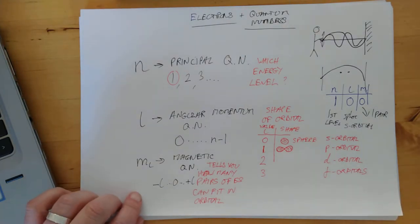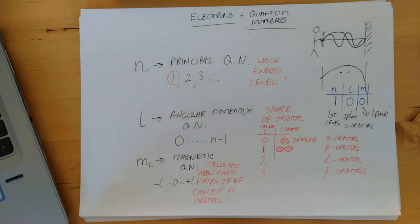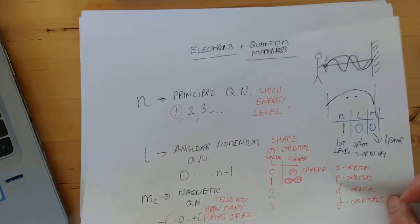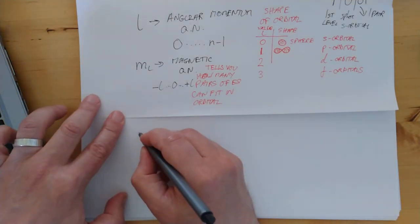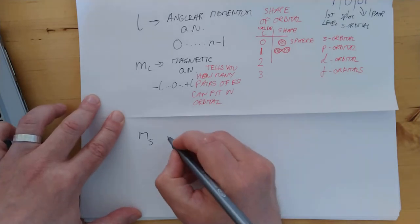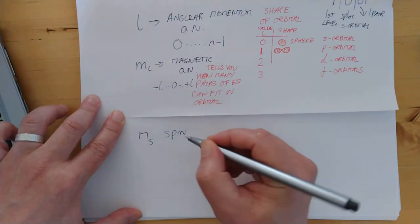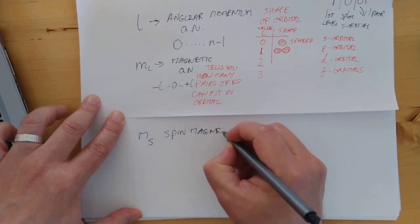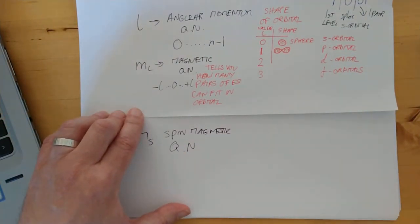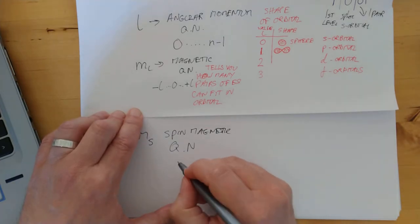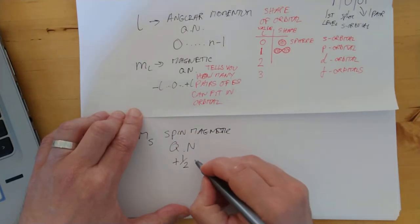I think I'll do the last quantum number. The last quantum number, they've changed the notation of this one slightly. This is called MS. This is the spin magnetic quantum number. What does it tell you and what are its values? The good news is the values are actually surprisingly sane. This can either be plus a half or negative a half. What does it tell you? The SQA says that it tells you the direction of the spin, but that's not really very helpful, is it?